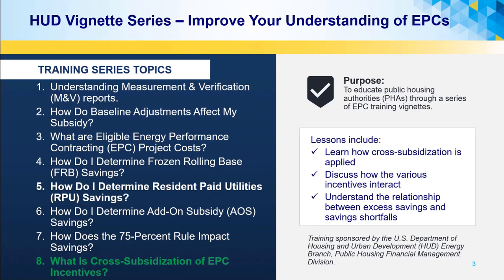The vignette series includes the following topics: measurement and verification reports (M&V), baseline adjustments, project costs, frozen rolling base savings, resident paid utility savings, add-on subsidy savings, 75 percent project rule, and cross-subsidization of EPC incentives. For those of you that are new to EPCs, the vignettes can serve as an introduction to key EPC terms and principles required to implement a successful EPC.